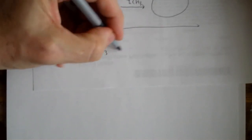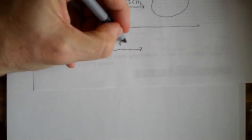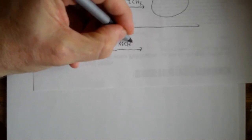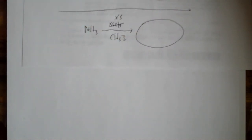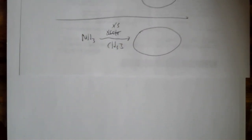And then ultimately the end of that conversation is if you take ammonia and you treat it with excess, how do you spell excess? Excess methyl iodide, what are you going to get? Think about that. Be ready to answer that when we talk next.